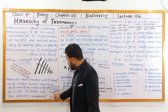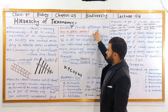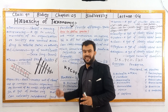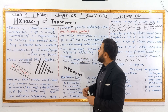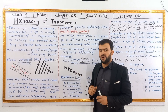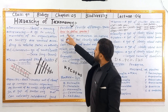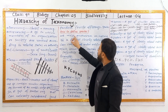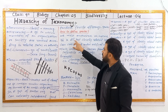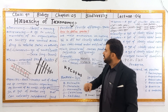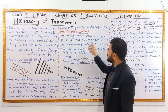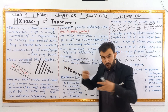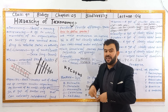A group of similar organisms that can naturally interbreed and produce fertile offspring is called a species. There is a group that can naturally be found in nature and interbreed naturally. There is a book called How to Define Species.